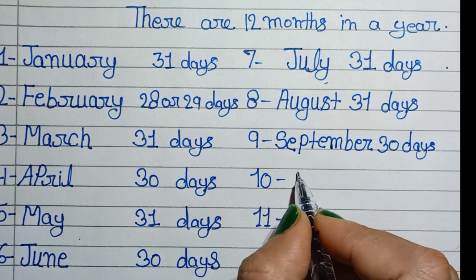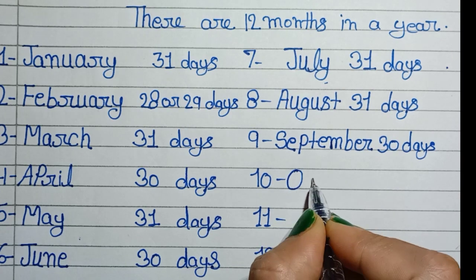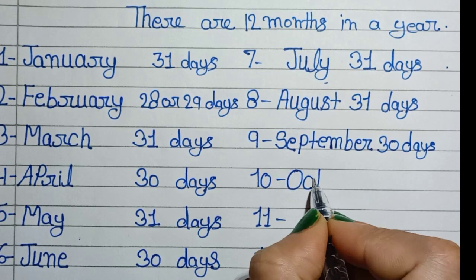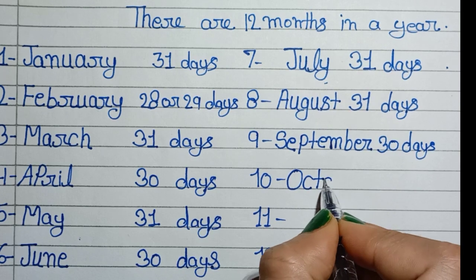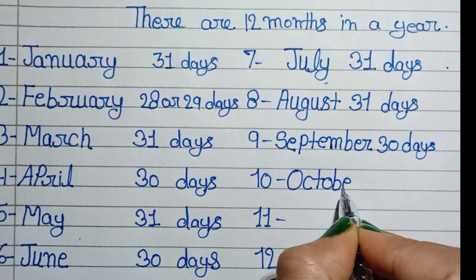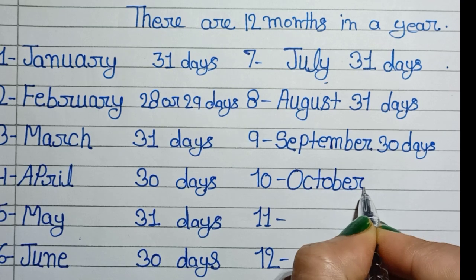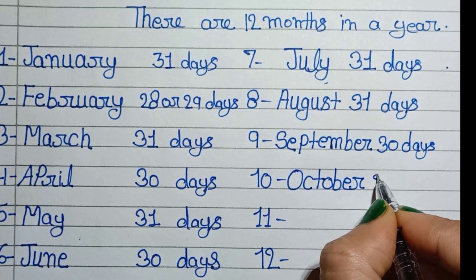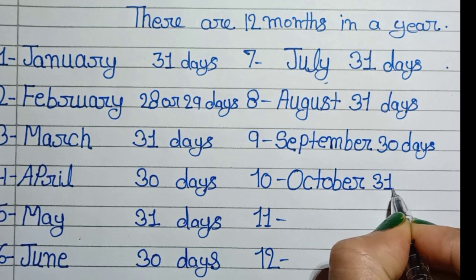October. O, C, T, O, B, E, R. October, 31 days.